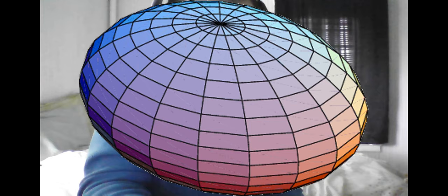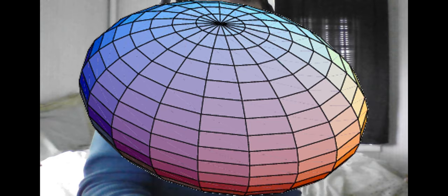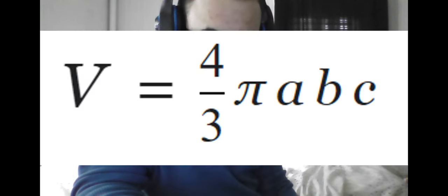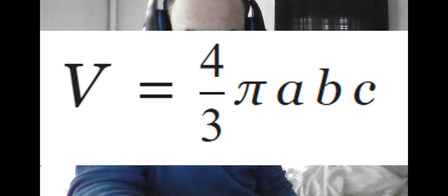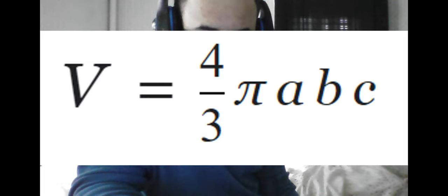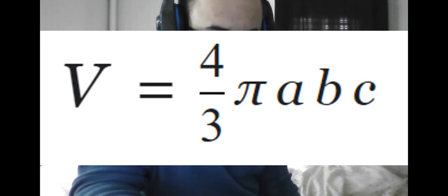In particular, since we know the volume is 4/3 of pi r cubed for a normal sphere, it should follow that for an ellipsoid the volume is 4/3 pi times a times b — like for a 2D ellipse — but times c as well, which is simply the height of the ellipse measured relative to the center.